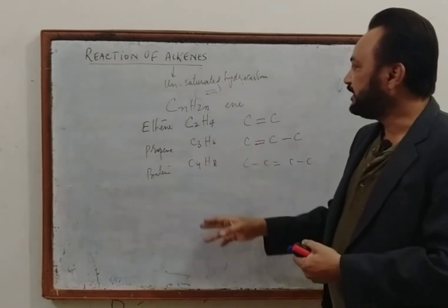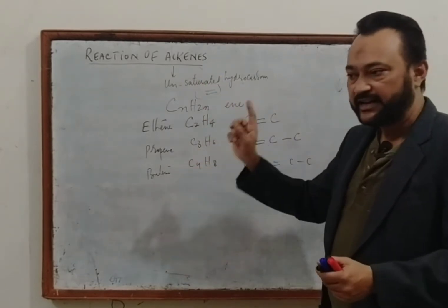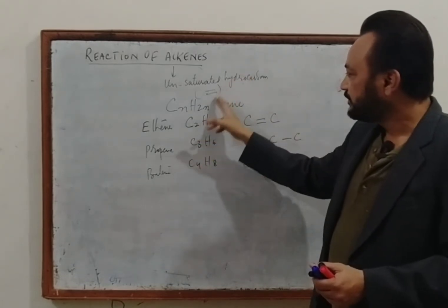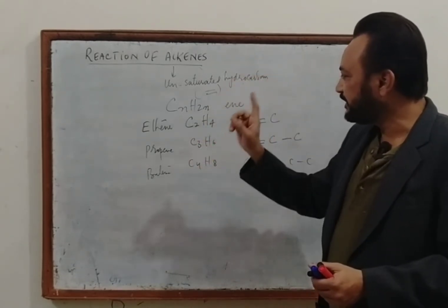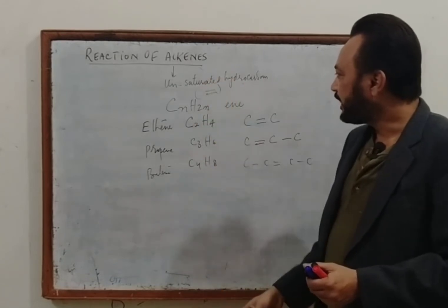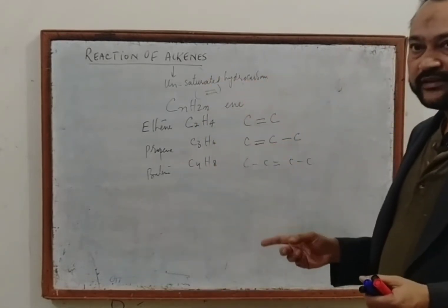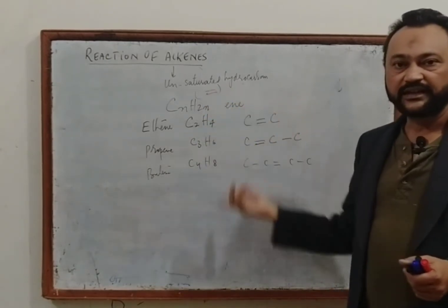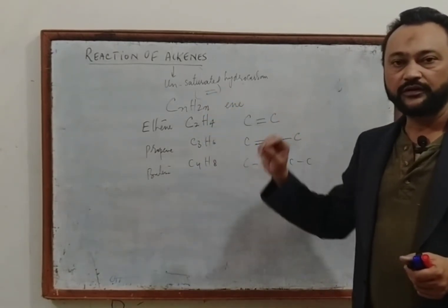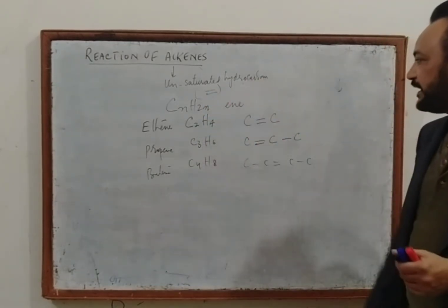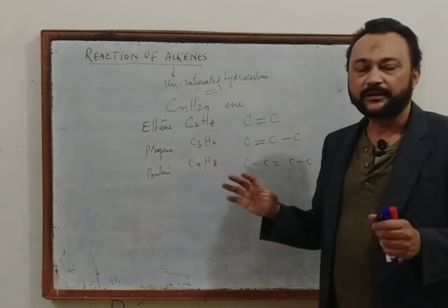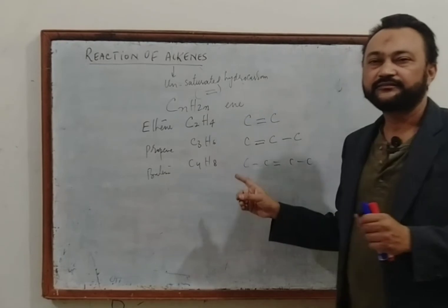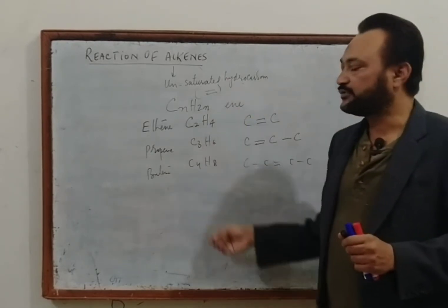Double bond must be present between carbon and carbon. They are called unsaturated because hydrogen atoms are not completely filled — carbon is not fully loaded with hydrogen. That is why they are said to be unsaturated.